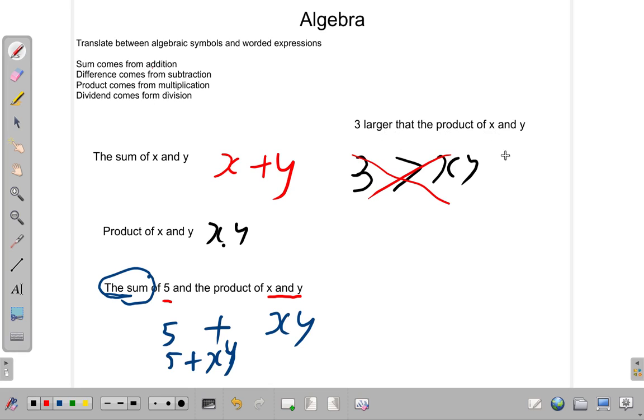I asked for three larger than the product of x and y. Now, it's like I say, what is three larger than 20? What is three larger than 20? It means you had 20 and you go three more. Three larger than. So it would be 20 plus 3.